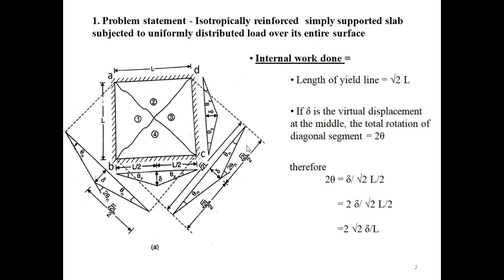Today we continue with Part 2, where we are going to see the derivation for yield line theory of different slabs with different shapes. Problem statement one: an isotropically reinforced simply supported square slab subjected to uniformly distributed load over its entire surface. Here you can see this is a square slab simply supported on all four sides, divided into four segments numbered one, two, three, and four.